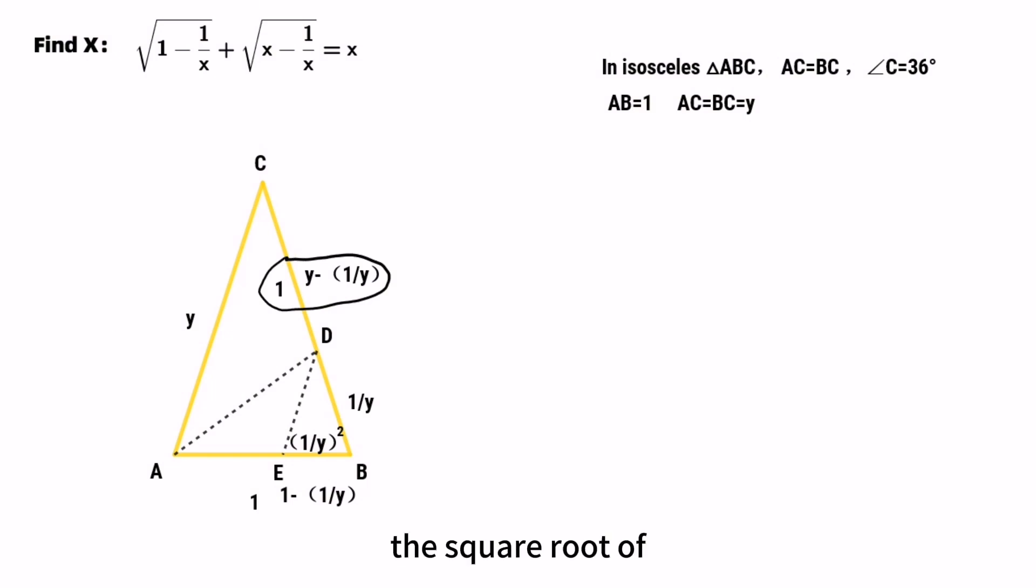The square root of Y minus 1 over Y should equal 1. Meanwhile, we can find the square root of 1 minus 1 over Y equals 1 over Y.